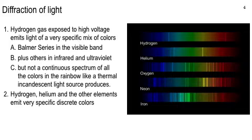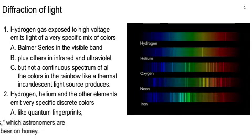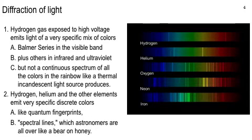This diagram shows hydrogen, helium, oxygen, neon, and iron. And they're all different. And so these spectra are like quantum fingerprints. We call them spectral lines. Astronomers, they're constantly looking at spectra. They're on them like a bear on honey. And we're going to be talking about them all the time.